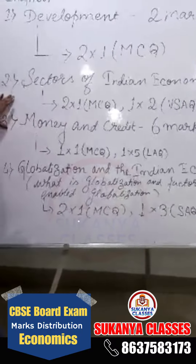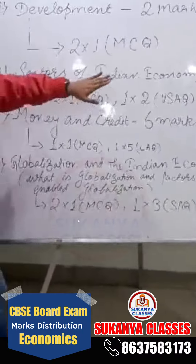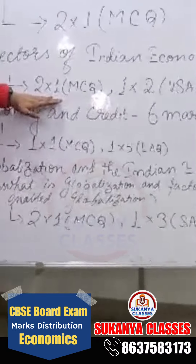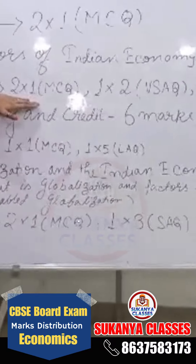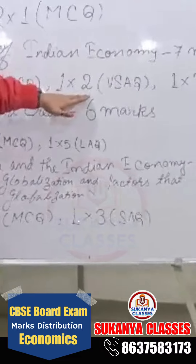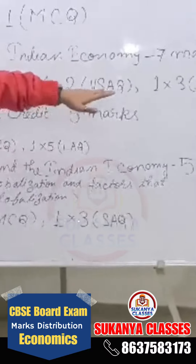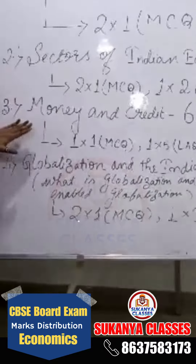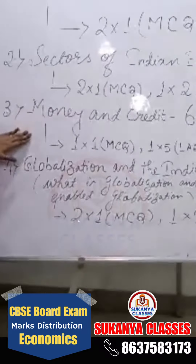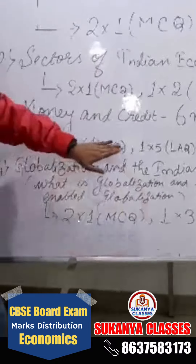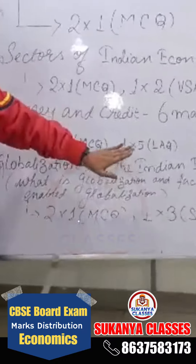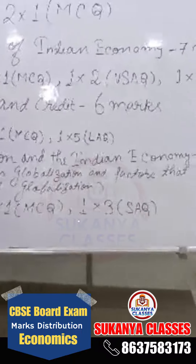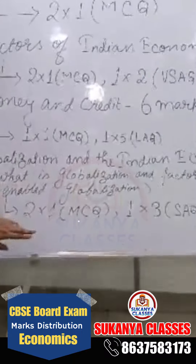Sectors of Indian Economy and Money and Credit are carrying the highest marks — one is seven marks and another is six marks. Sectors of Indian Economy has two questions from MCQ, one from very short answer, and one from short answer questions — that is three marks and two marks. Money and Credit comprises one MCQ and one long answer question.